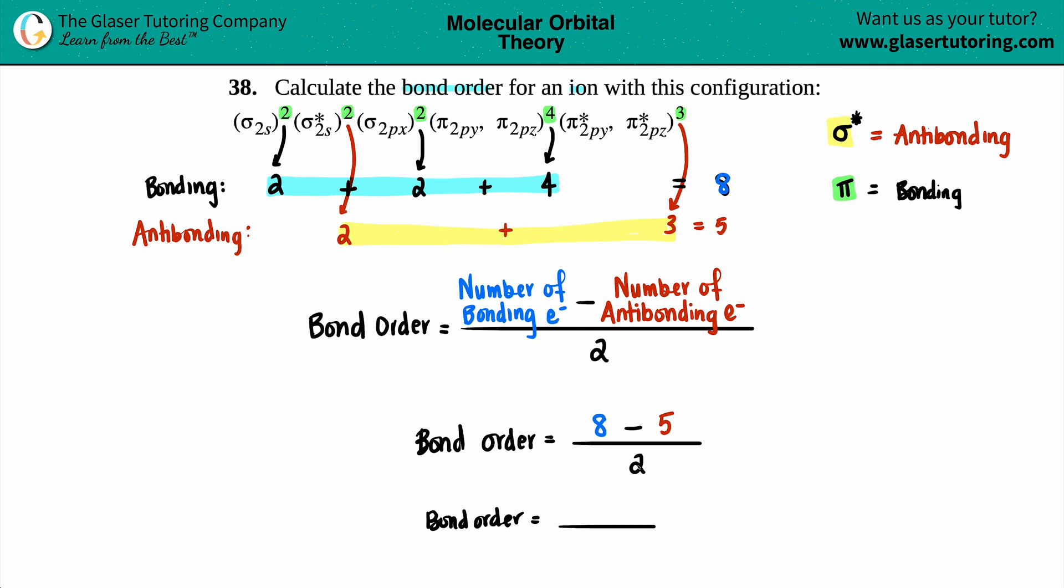Bond order equals eight minus five is three, so three over two. You could leave it as a fraction if you want, but if you want to divide, the bond order would be—drum roll, please—1.5.